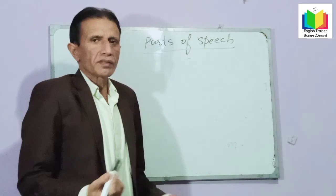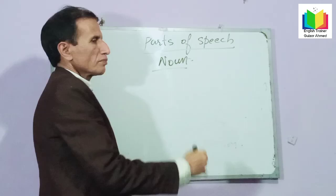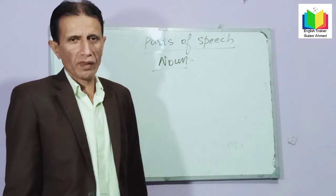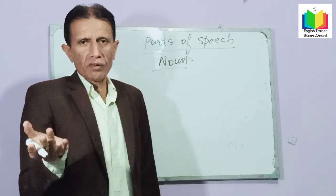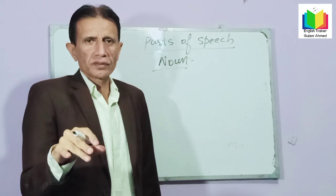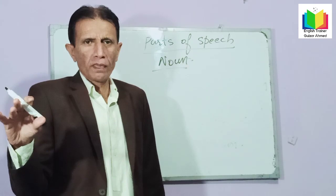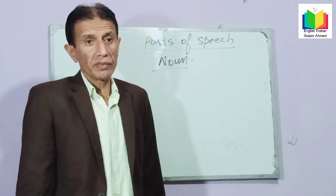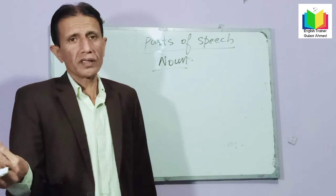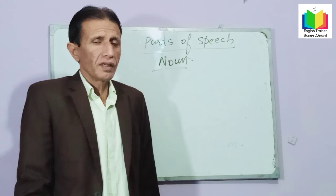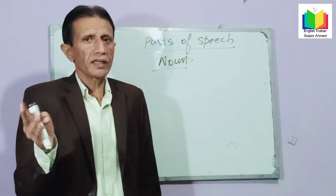What is a noun? Noun is everything — everything in the world is a noun. But these nouns have been categorized. The definition of noun is: a noun is the name of some person, place, thing, idea, or action. Even action can be called a noun. So first of all I will tell you about the categorization of noun.